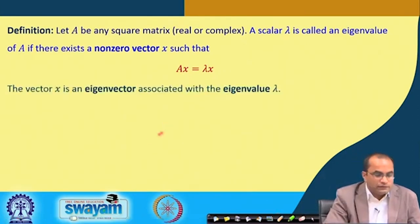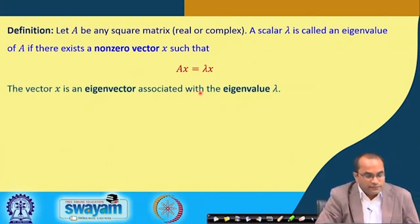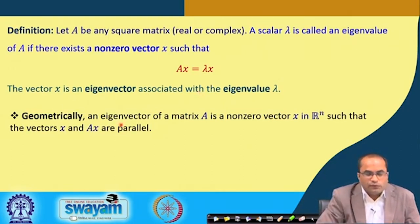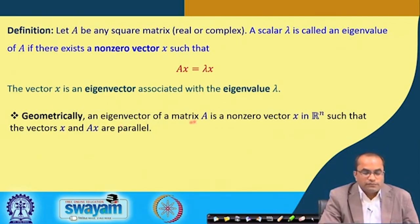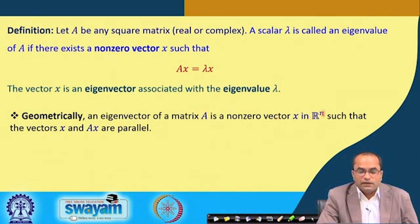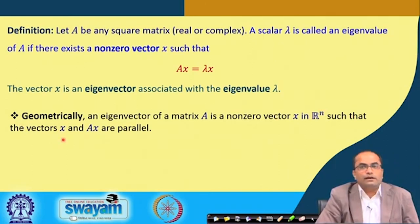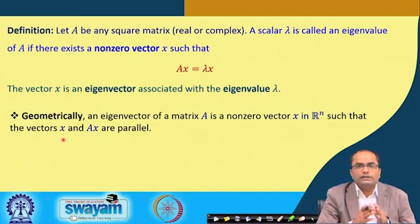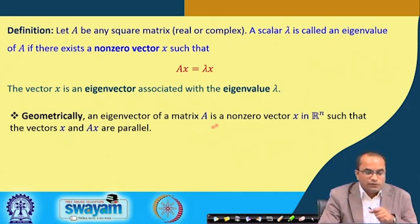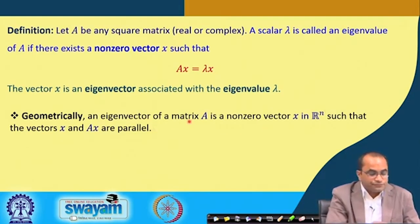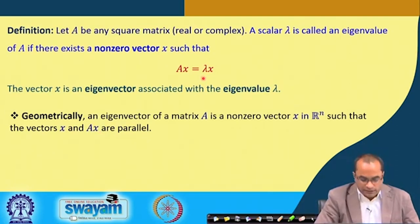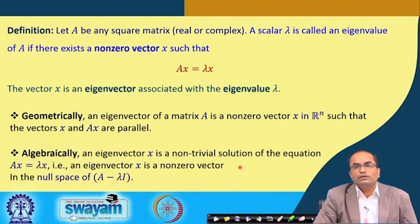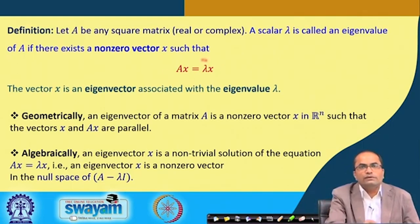The vector x is the eigenvector associated with eigenvalue lambda. Geometrically, an eigenvector of matrix A is a non-zero vector x in R^n such that x and Ax are parallel — the length changes but the direction does not, and the eigenvalue lambda captures that magnitude change.